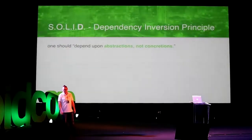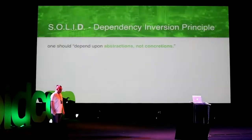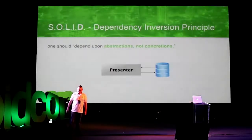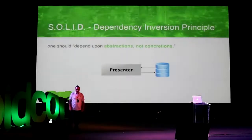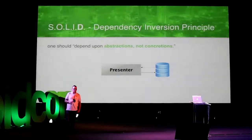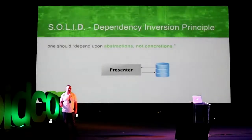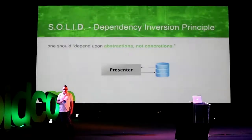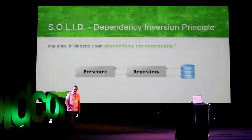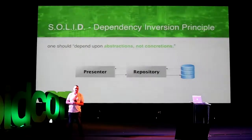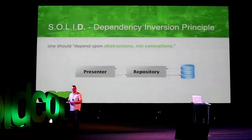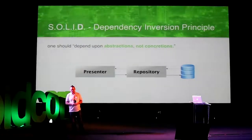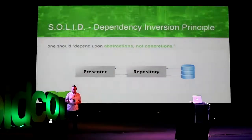The Dependency Inversion Principle basically states that if I have a presenter in the MVP pattern and it has knowledge about the implementation — for example, knowing that data comes from a database — it breaks this principle. What this principle says is that we should depend on the abstraction instead of the concrete thing. An abstraction in this case could be a repository. The presenter fetches data from the repository and really doesn't care if it's from a database, from the internet, in memory, or whether there is a cache layer inside the repository.